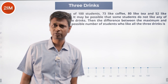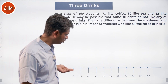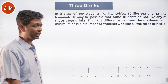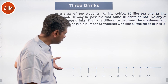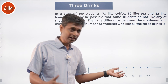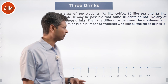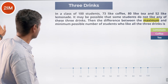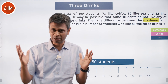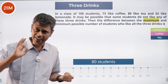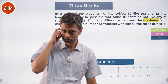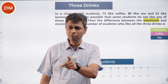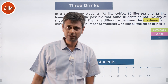Think of 100 people as student number 1 through 100. 73 like coffee, 80 like tea, and 52 like lemonade. I'm going to number the people and put them on a stack. Starting with tea — the largest group of 80 — I place students 1 through 80 as tea drinkers. Now I want to find the maximum number of people who like all three.